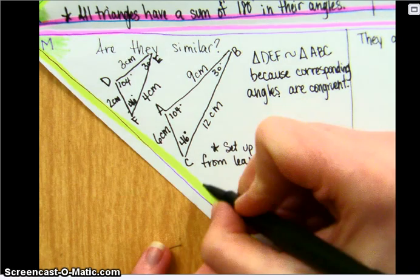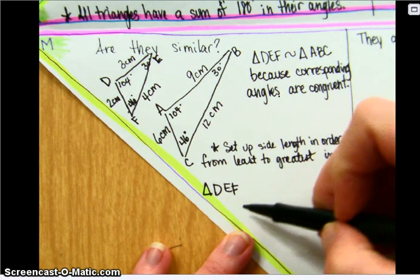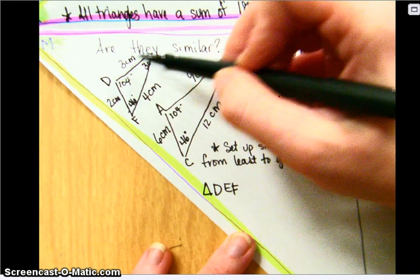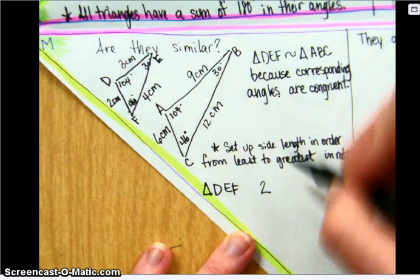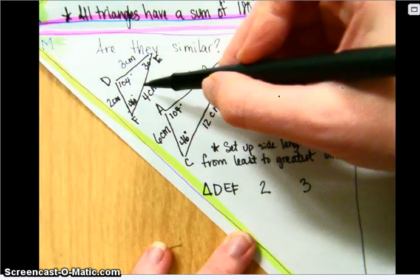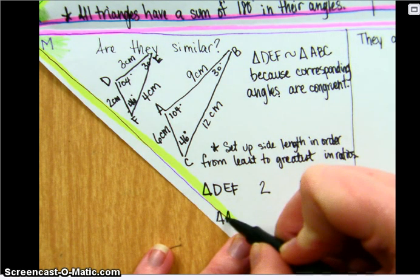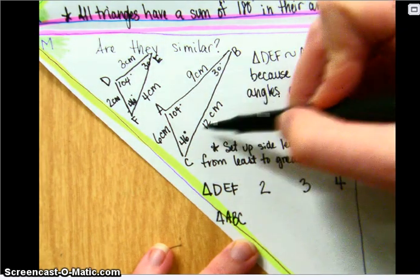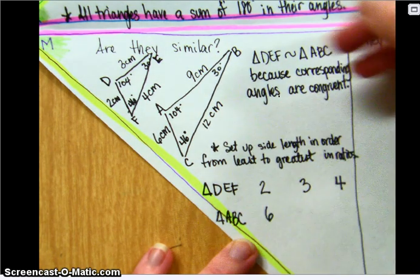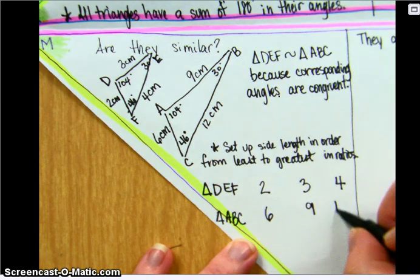So if we start with triangle DEF, the smallest on DEF is 2. And then the next measure would be 3, and then the next measure would be 4. And then looking at triangle ABC, the smallest measure is 6, and then 9. And then 12 is last.